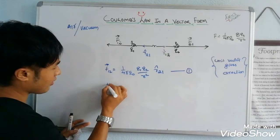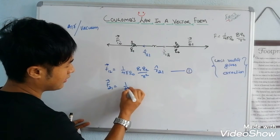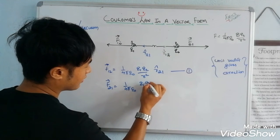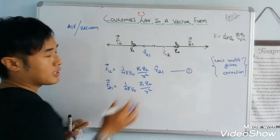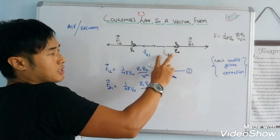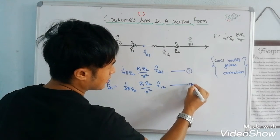Exactly same. F vector 2,1 equals to 1 by 4πε₀, q1 q2 by r square. F2,1 direction is in that direction, which is given by R cap 1,2. This is equation 2.